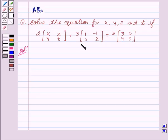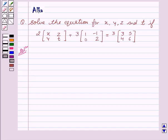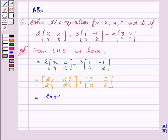Now we will solve LHS and RHS individually. This gives us [2x, 2z, 2y, 2t] matrix plus [3, -3, 0, 6] as our second matrix. Now we will add these two matrices. This gives us [2x+3, 2z-3, 2y+0, 2t+6].